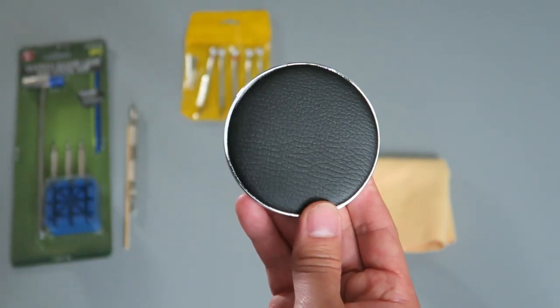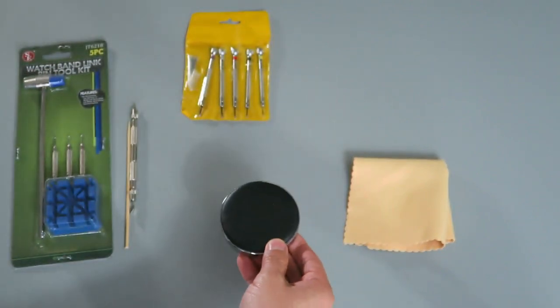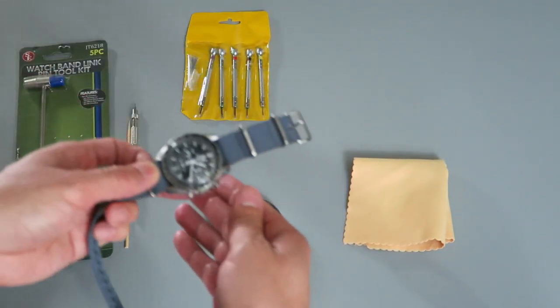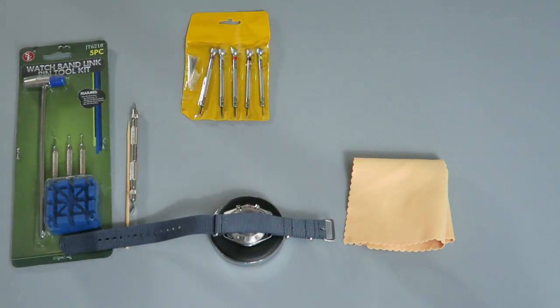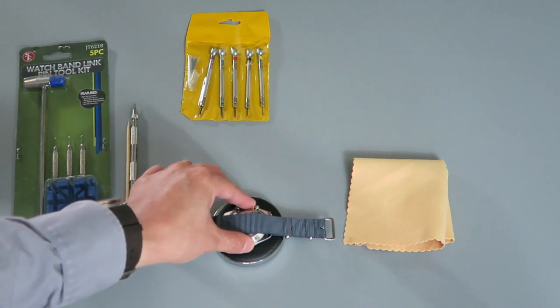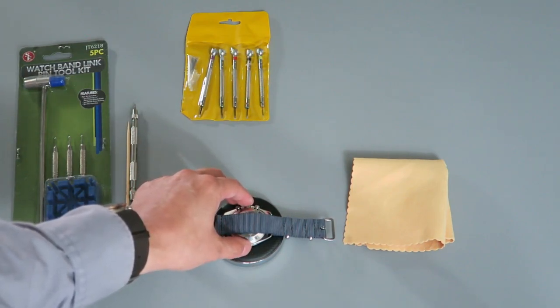This here is an interesting piece. It's basically a watch cushion and it enables you to work on your watch without having to worry about damaging the watch face or the watch crystal. As you can see you kind of put it face down like that and it cushions the watch and gives you a surface to work on.